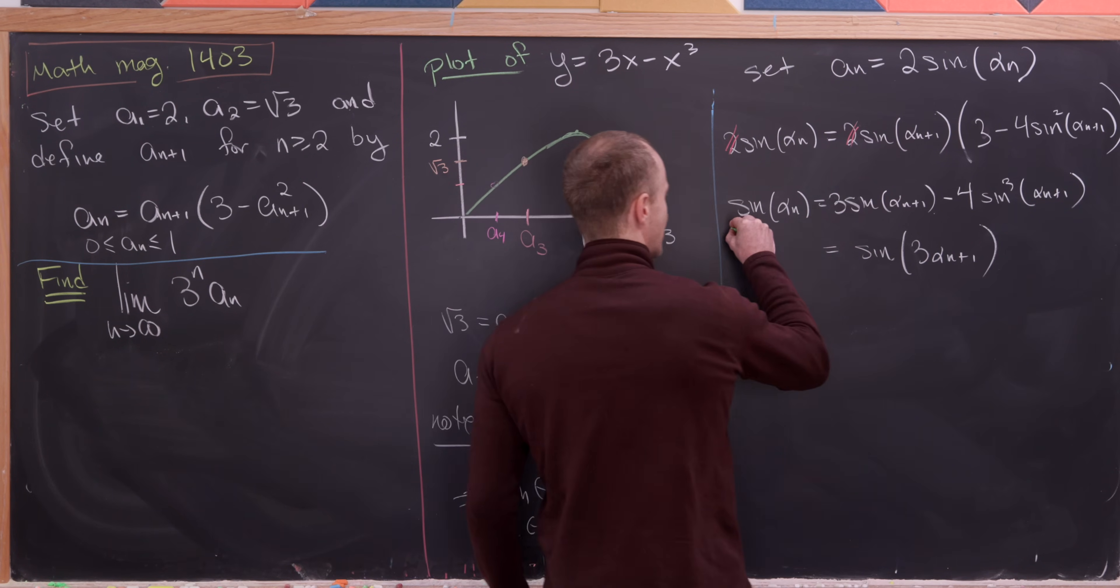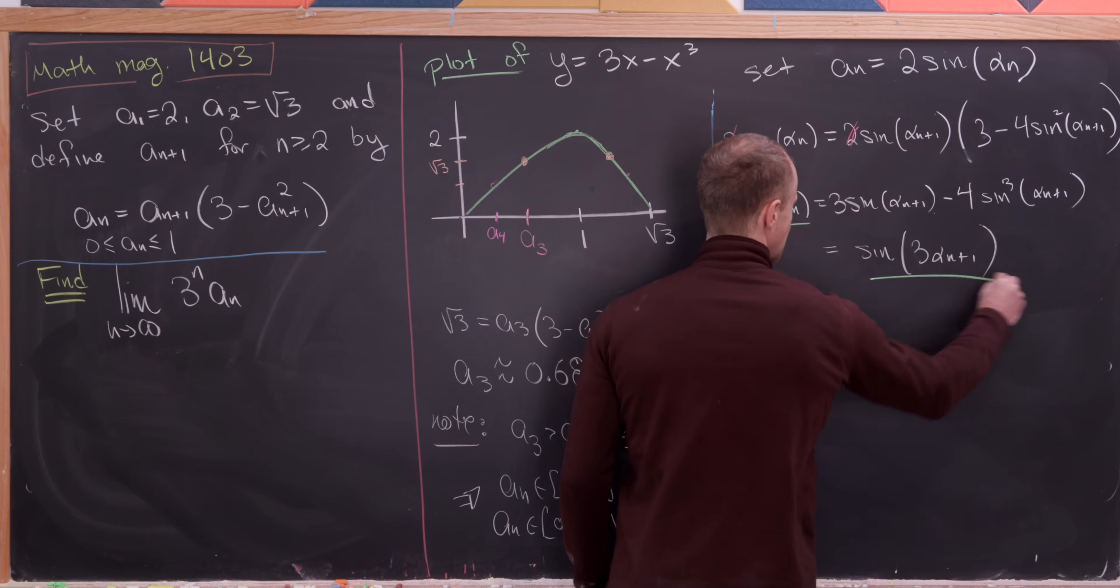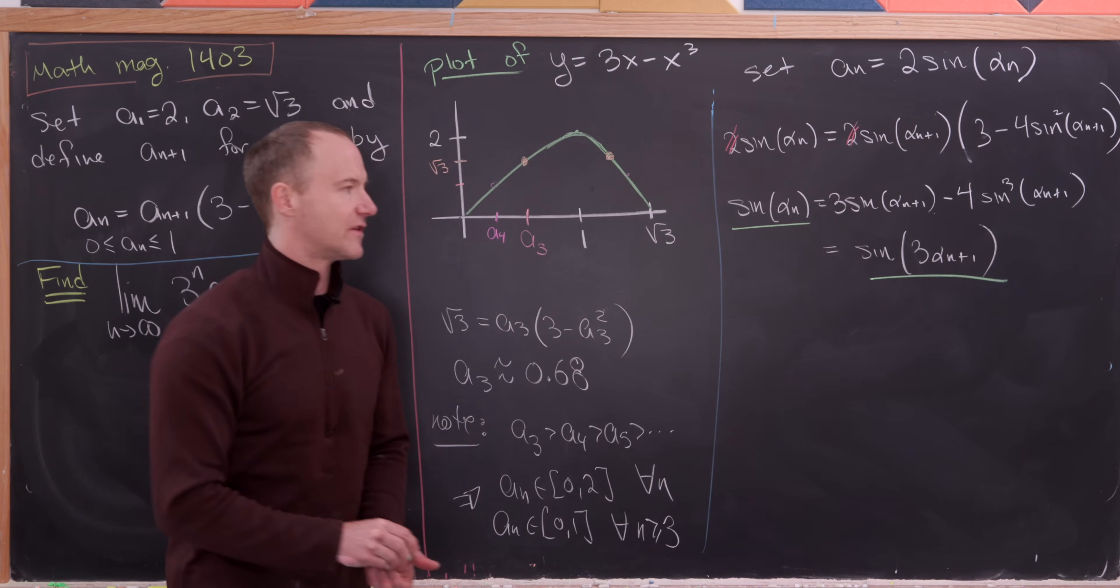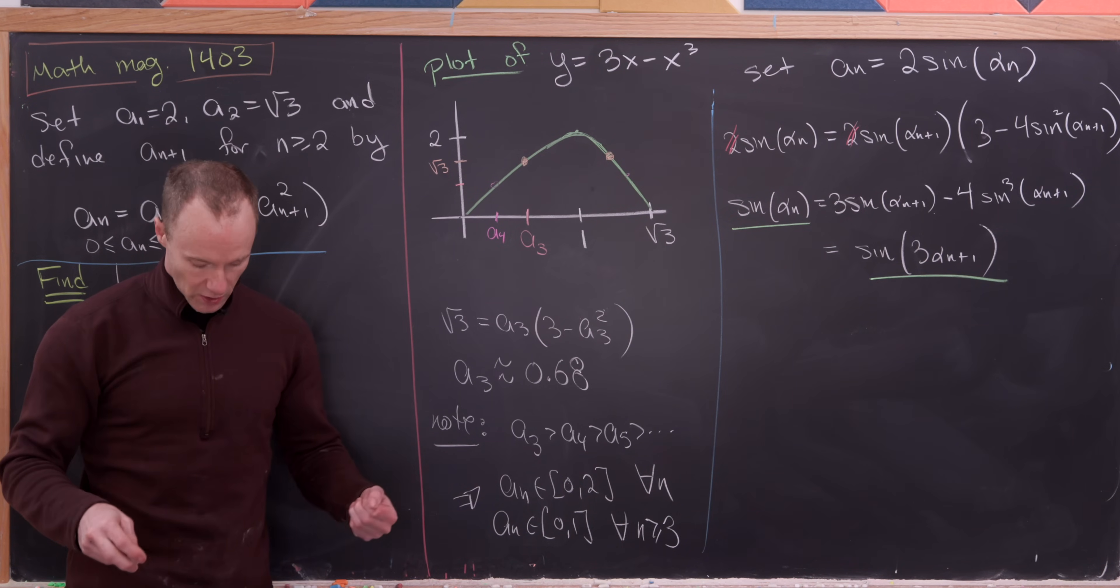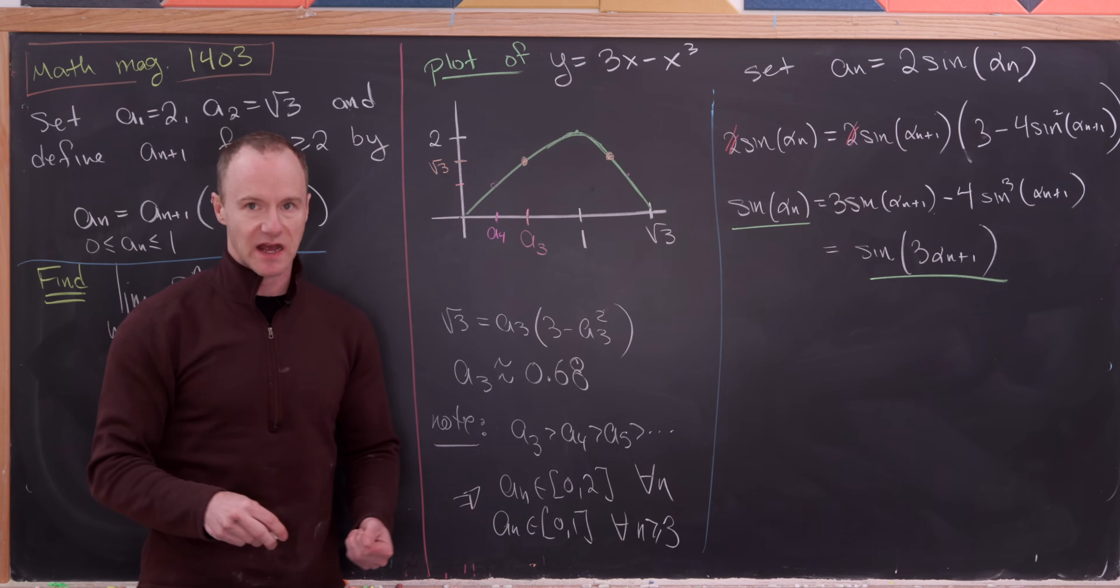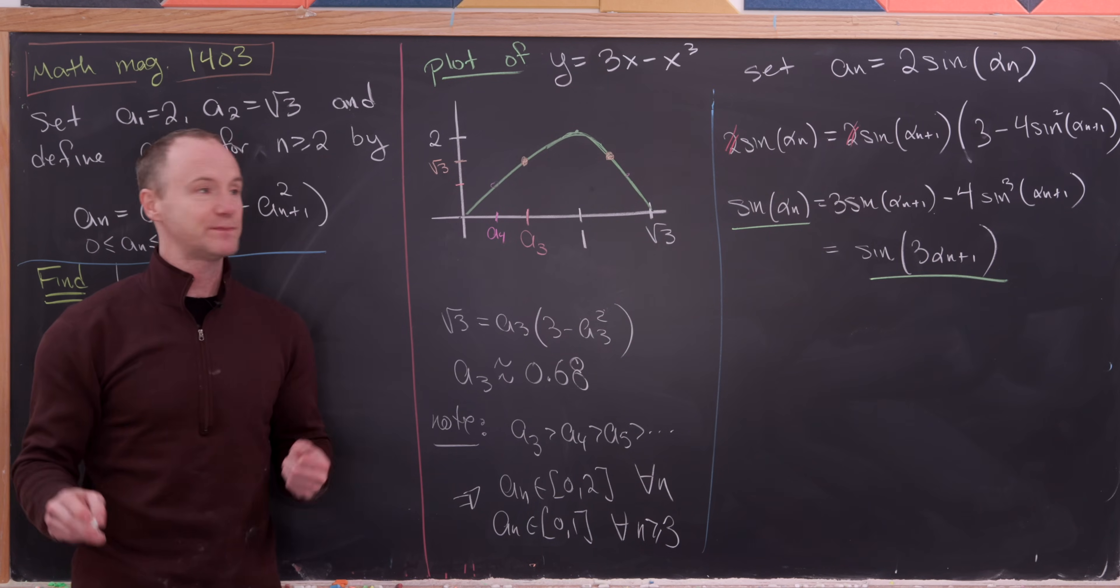So check it out. We have sine of alpha n equals sine of 3 alpha n plus 1. Now that doesn't mean that those arguments are equal because we know the sine function is not 1 to 1, but it is periodic.